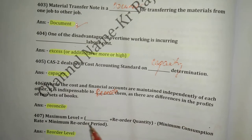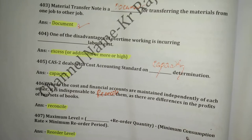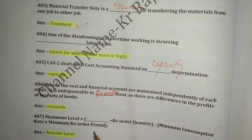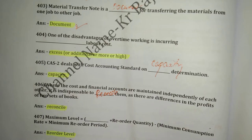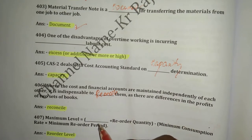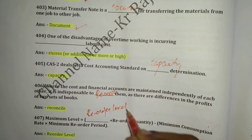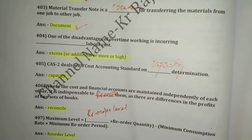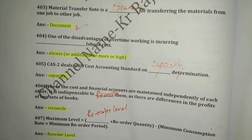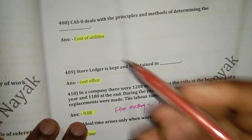Question number 407: Maximum level is equal to reorder level plus reorder quantity minus minimum consumption rate multiplied by minimum reorder period. The right answer is reorder level. The formula is: reorder level plus reorder quantity minus (minimum consumption rate × minimum reorder period).